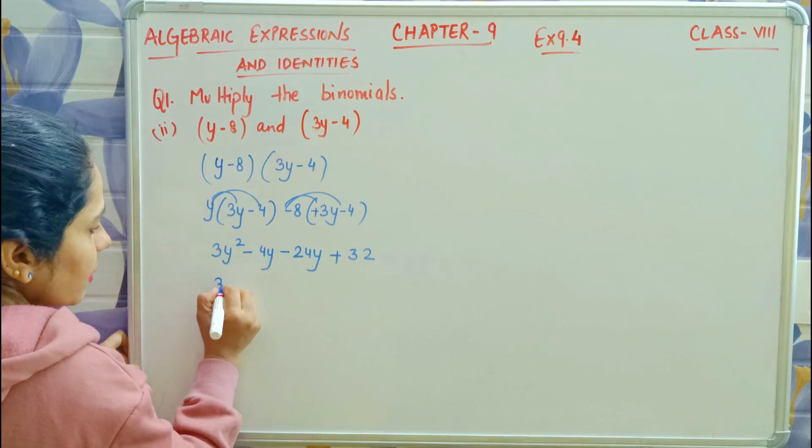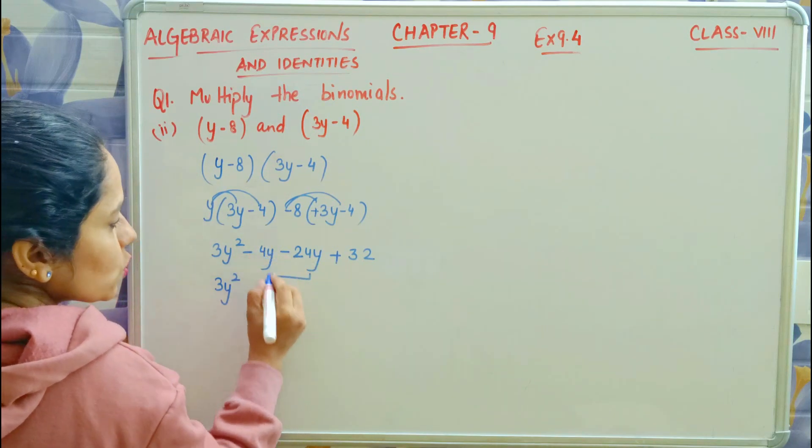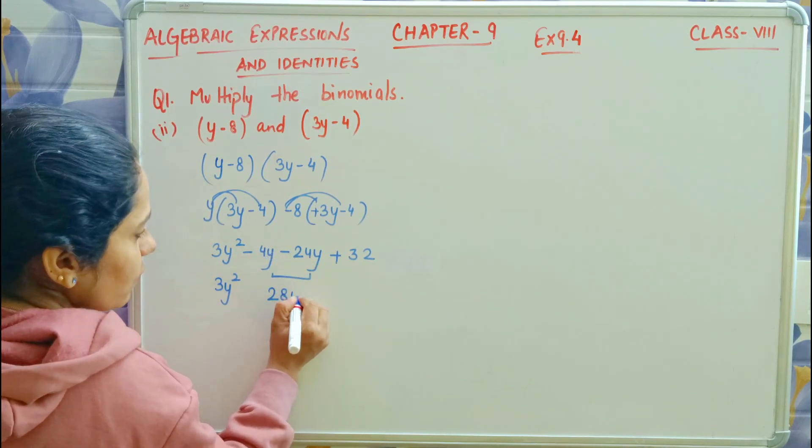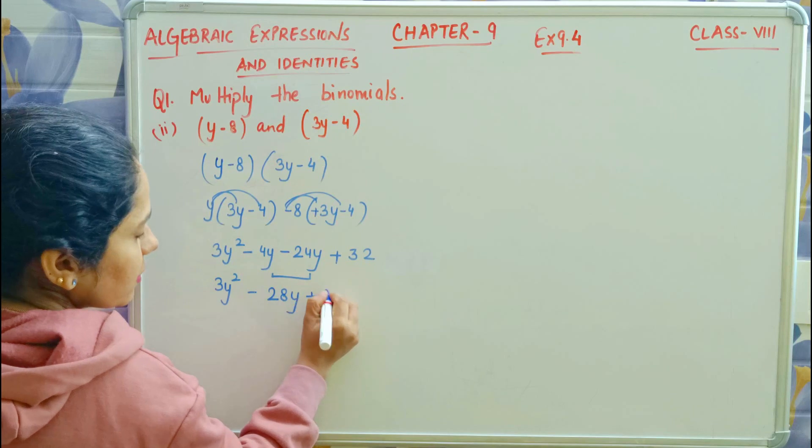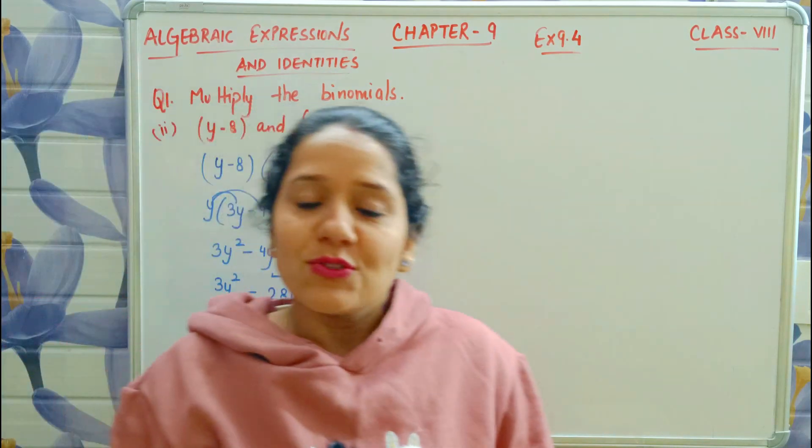Always pay attention to the signs. Now see, 3y squared. Both are like terms. Minus, minus is plus. 24 and 4 is 28y. The bigger sign is 32 as it is. This is your solution.